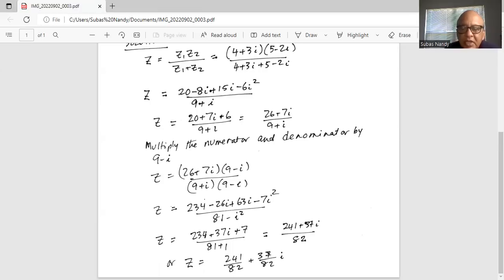So in the numerator, we have 234 plus 7 is 241 plus 37i divided by 82. We separate this into the real number portion and the complex portion. So 241 by 82 for the real part, plus 37 by 82 for the imaginary part, which is the coefficient of the imaginary number i. So that is your final answer for the total impedance.